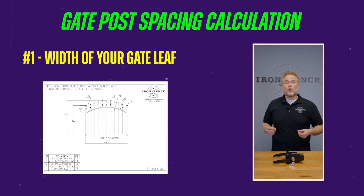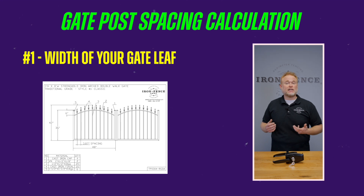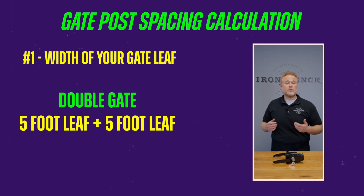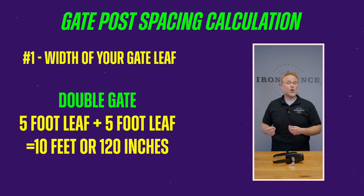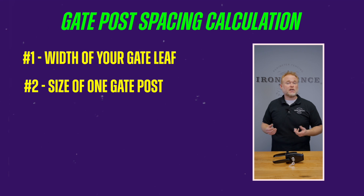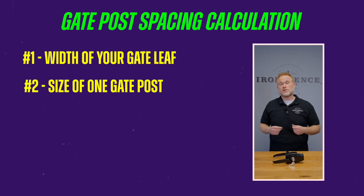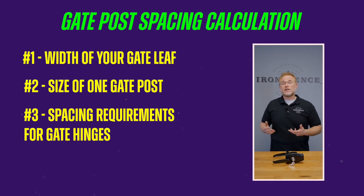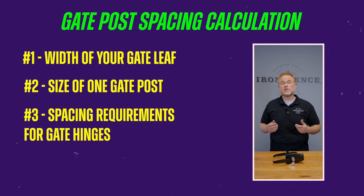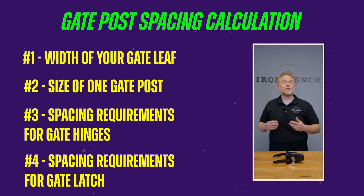The four items are: one, the width of your gate leafs — if it's a double gate, it'll be the combined leaf size, so a 10-foot double gate made up of two five-foot halves would be 10 feet or 120 inches; two, the size of one gate post, typically the larger posts on your order; three, the spacing requirements for your gate hinges; and four, the spacing requirements for your gate latch. Your order confirmation will identify those four items, but it will not provide the spacing requirements for your hinges and latches — we'll go over that in the tables next. Note that we do sometimes change gate hinge and latch hardware vendors, so verify spacing on our installation page and print installation guide for the most up-to-date information.